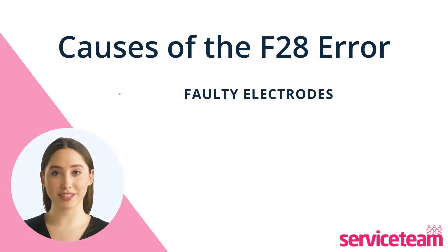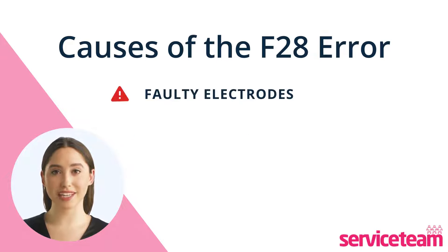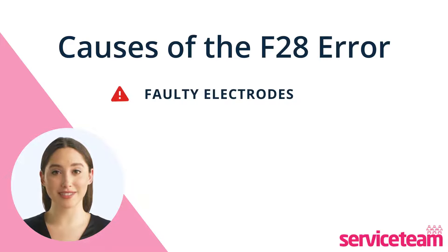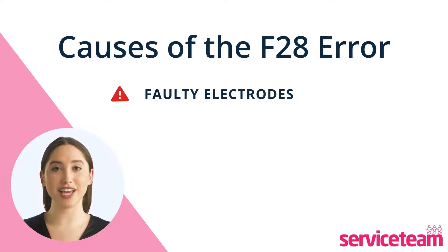Faulty electrodes in the boiler can trigger the F28 fault due to issues with electrical components. These parts can wear out or be affected by moisture and vibrations over time, causing ignition problems.